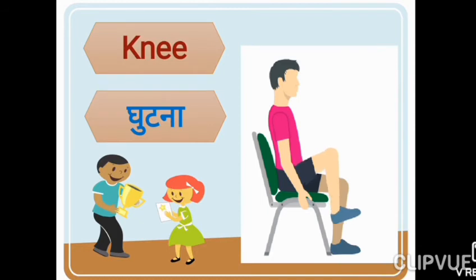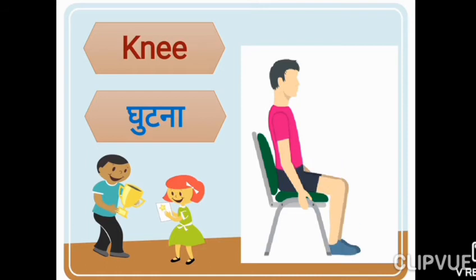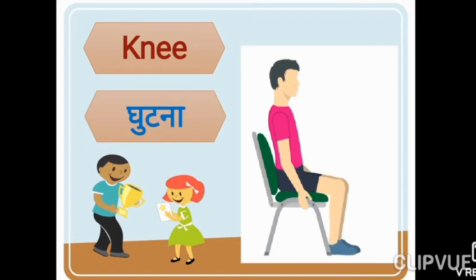Next: knee — K-N-E-E, knee. Knee means the body part from where our leg moves and bends — jahan se hamara pair movement hota hai, ya to band hota hai. That body part is called the knee. What do we call it?